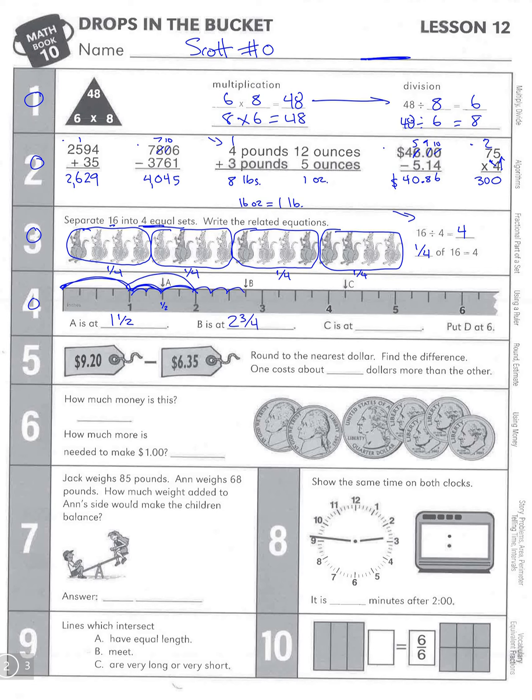C is at four whole inches—four whole big hops. So four inches and then just one little hop out of that. And then it says put a D at six, so just right above six: D, six whole inches.